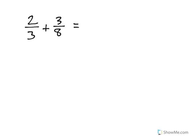We're going to look at how to add two fractions with unlike denominators. The first thing we need to do is find a common denominator. We need to find equivalent fractions for 2/3 and 3/8 where both denominators are the same.